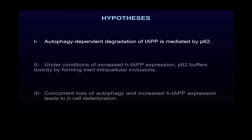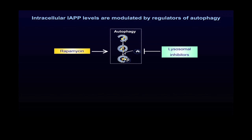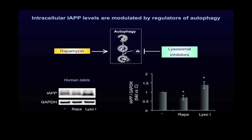To address the first hypothesis, we used pancreatic beta cells that were treated with a stimulator of autophagy, rapamycin, or lysosomal inhibitors, and followed IAPP intracellular levels. As you can see here on this immunoblot, rapamycin treatment leads to a decrease in IAPP protein levels. In contrast, lysosomal inhibitor treatment leads to an accumulation of IAPP. These data show that IAPP is degraded by an autophagy lysosomal-dependent degradation.